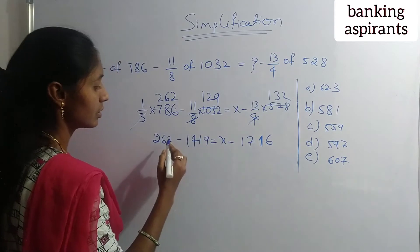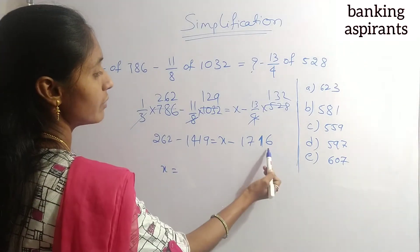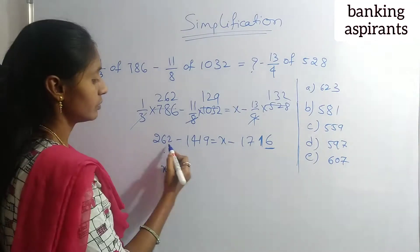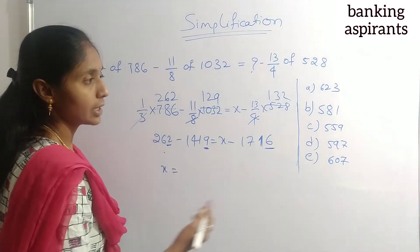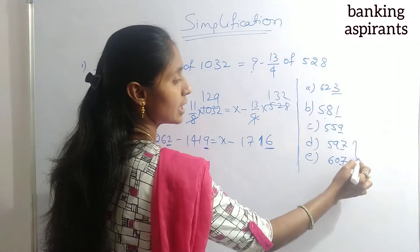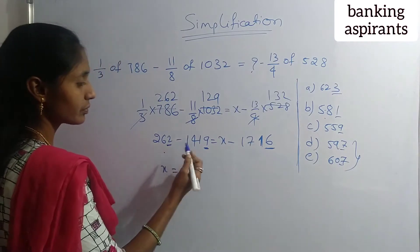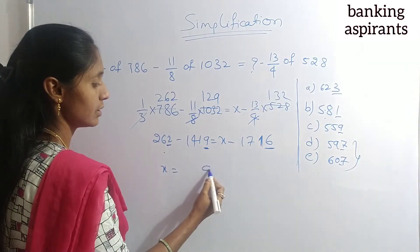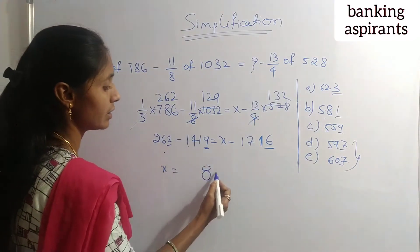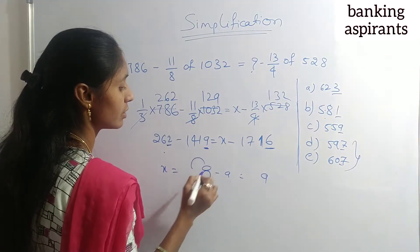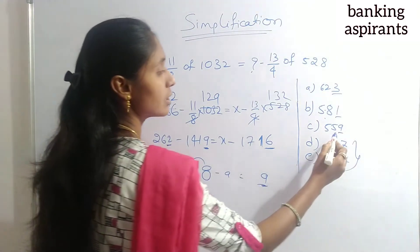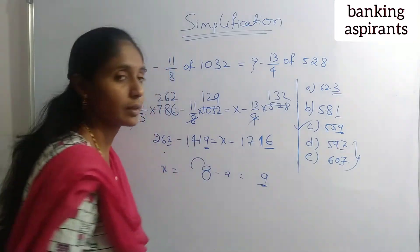x equals: looking at the unit digits, we get unit digit 9. Among the options, C (559) has unit digit 9. So the answer is C, 559.